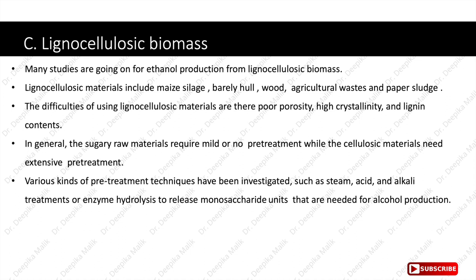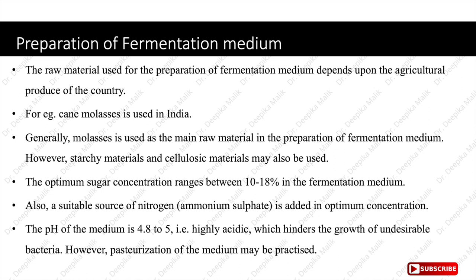To summarize, we have three categories of raw materials. First, sugars are readily available for production. Second, starchy materials where starch is first broken down into small fermentable sugars before ethanol production. Third, lignocellulosic materials, which need pre-treatment with enzymes, acids or alkali to break down into fermentable sugars. The raw material used depends on the agricultural produce of the country; for example, cane molasses is used in India. The optimum sugar concentration ranges between 10 to 18 percent in the fermentation medium.